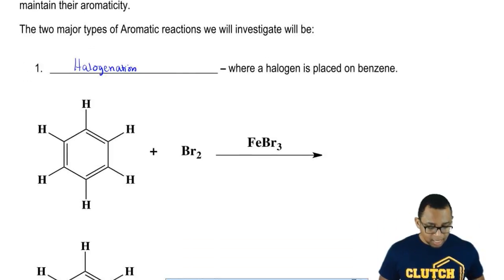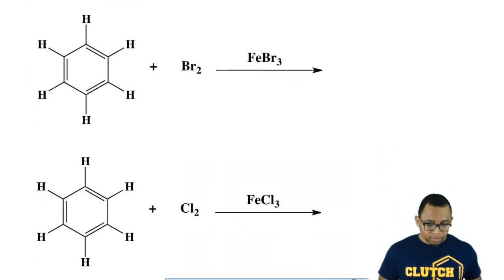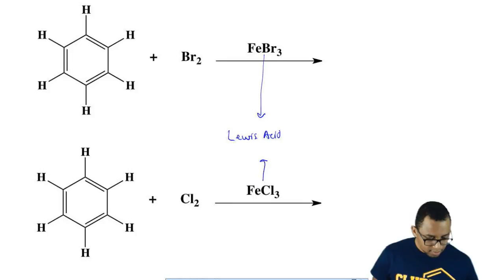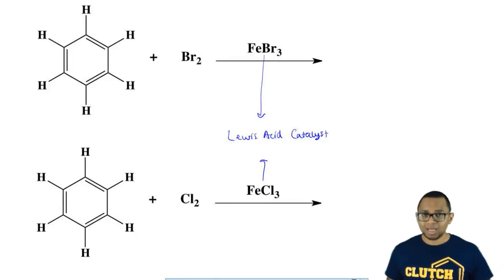In order to do this, we have to use what's called a Lewis acid catalyst. These two things are Lewis acid catalysts. Remember we've talked about Lewis acids before. Lewis acids are electron pair acceptors. The central element has less than eight electrons around it, so it can accept additional electrons. These Lewis acid catalysts help this process occur.